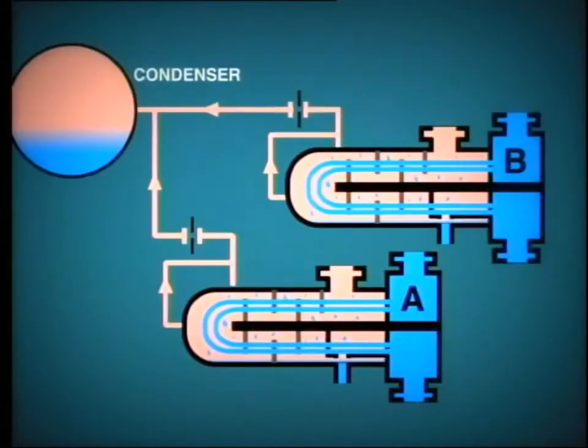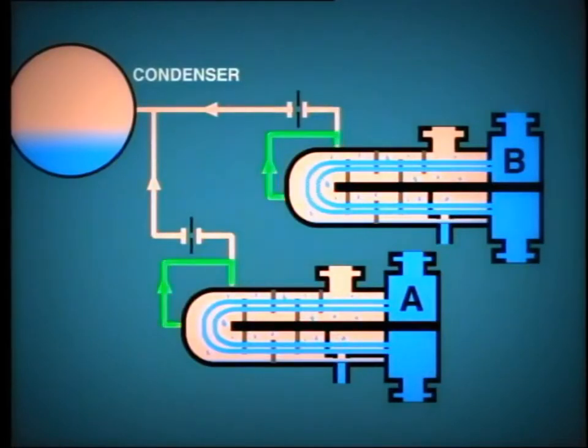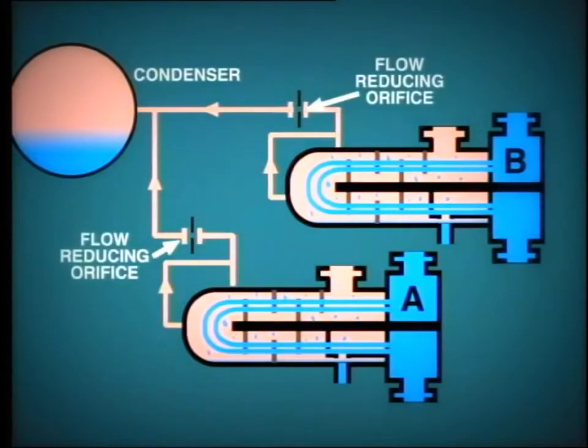In most plants, the venting arrangements are as shown here. You can see that the upper and lower vents from the heater join together and pass through this orifice direct to the condenser, which is of course operating at much lower pressure. The objective of the orifice is to reduce the flow, otherwise excessive steam may pass through the vent in addition to air and carbon dioxide.